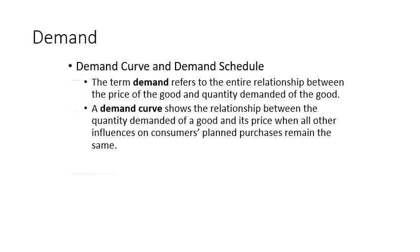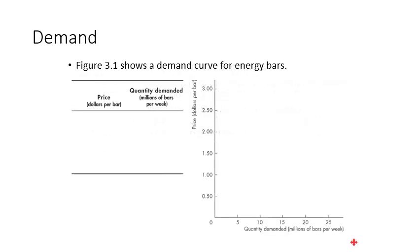Here we can see a demand schedule and demand curve showing the relationship between price in dollars and quantity demanded in millions of bars per week, using energy bars as an example. As price increases from $0.50 to $2.50, quantity demanded decreases from 22 to 5 million bars — represented by points A, B, C, D, and E. This represents a negative relationship.